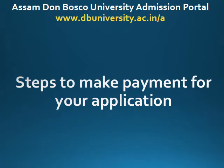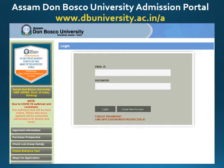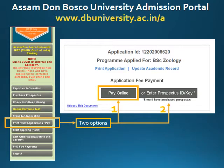Let us begin. The first step is to login to the admission portal at www.dbuniversity.ac.in. Once you login, on the left you will see various options. One of the options will be 'Print, Edit Application, Pay.' Click on it.